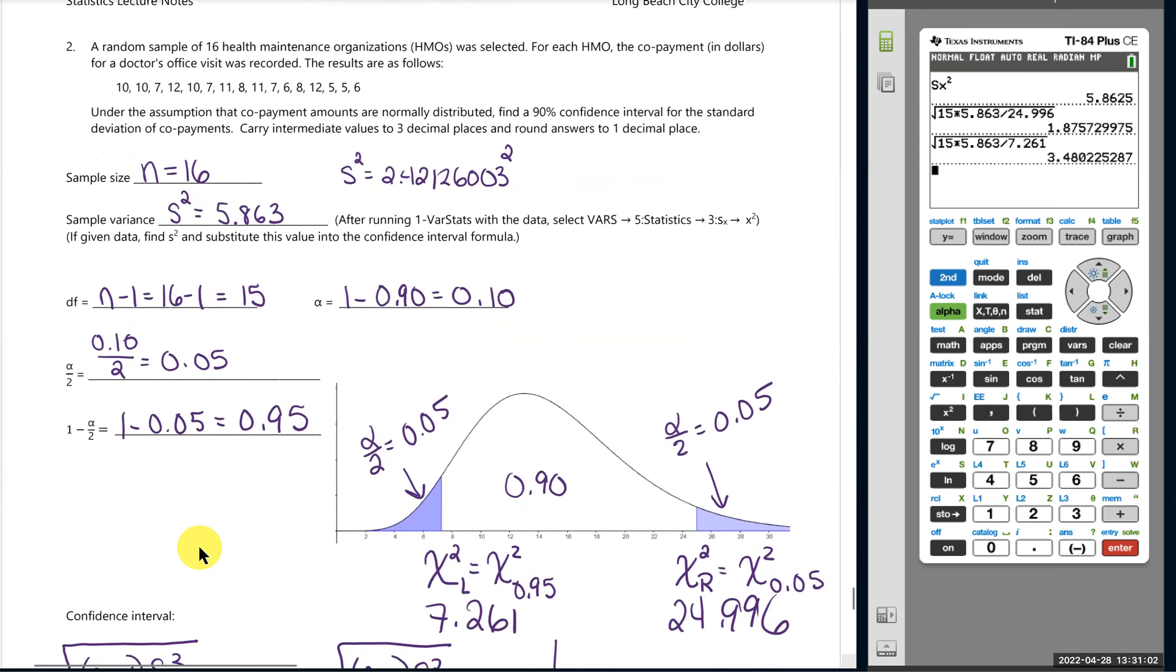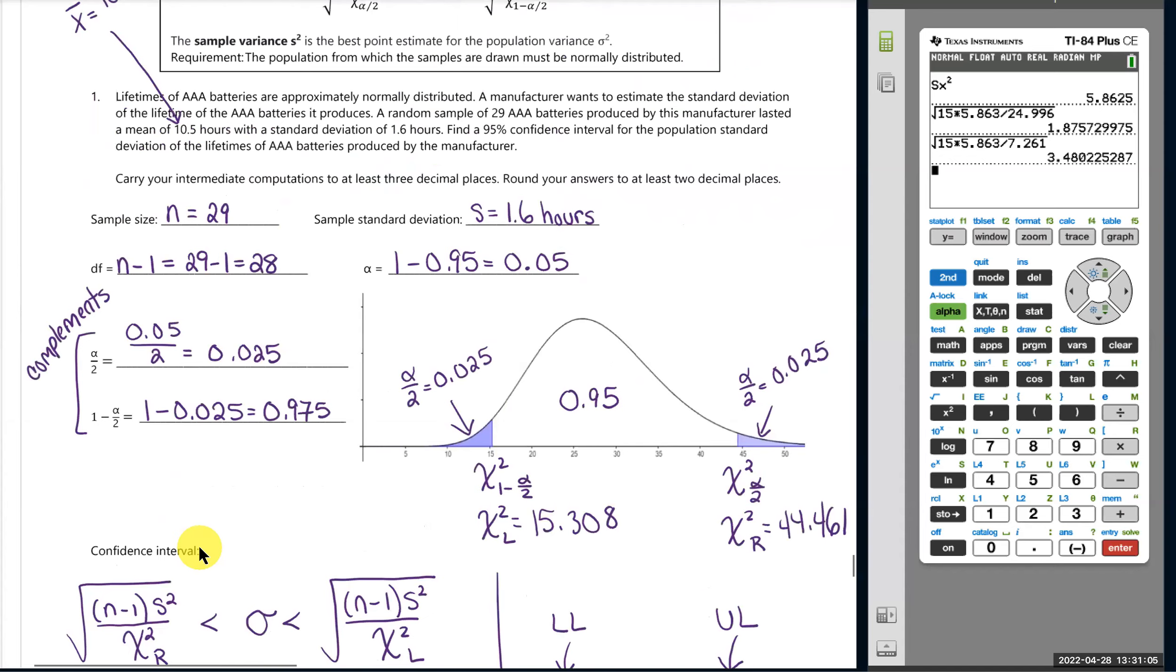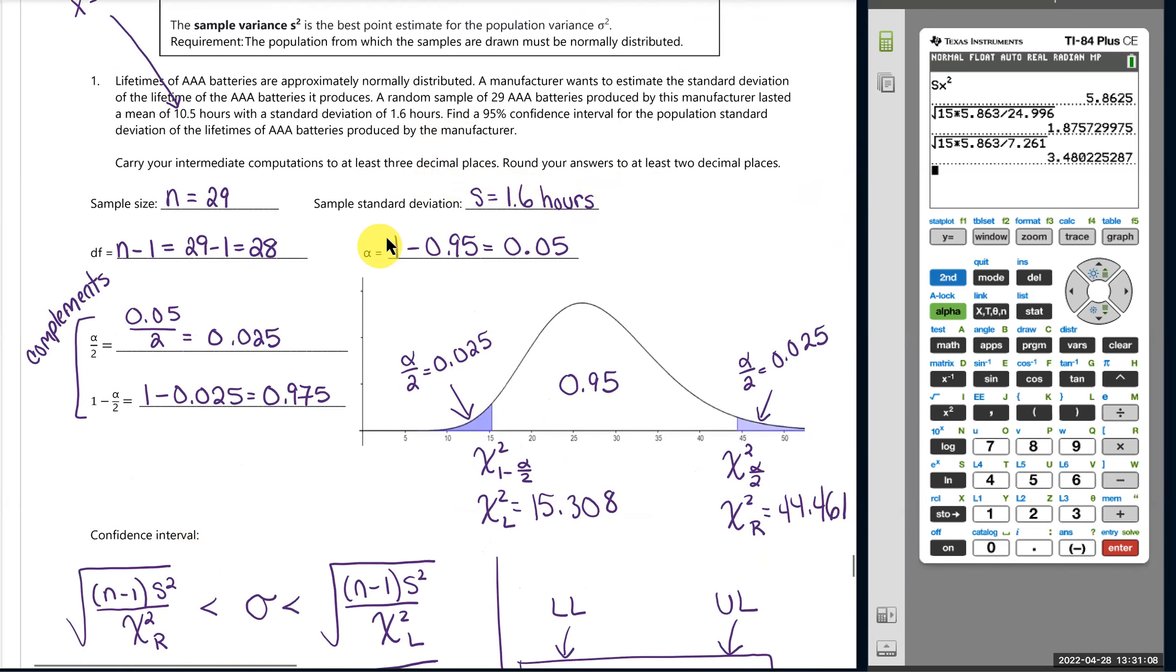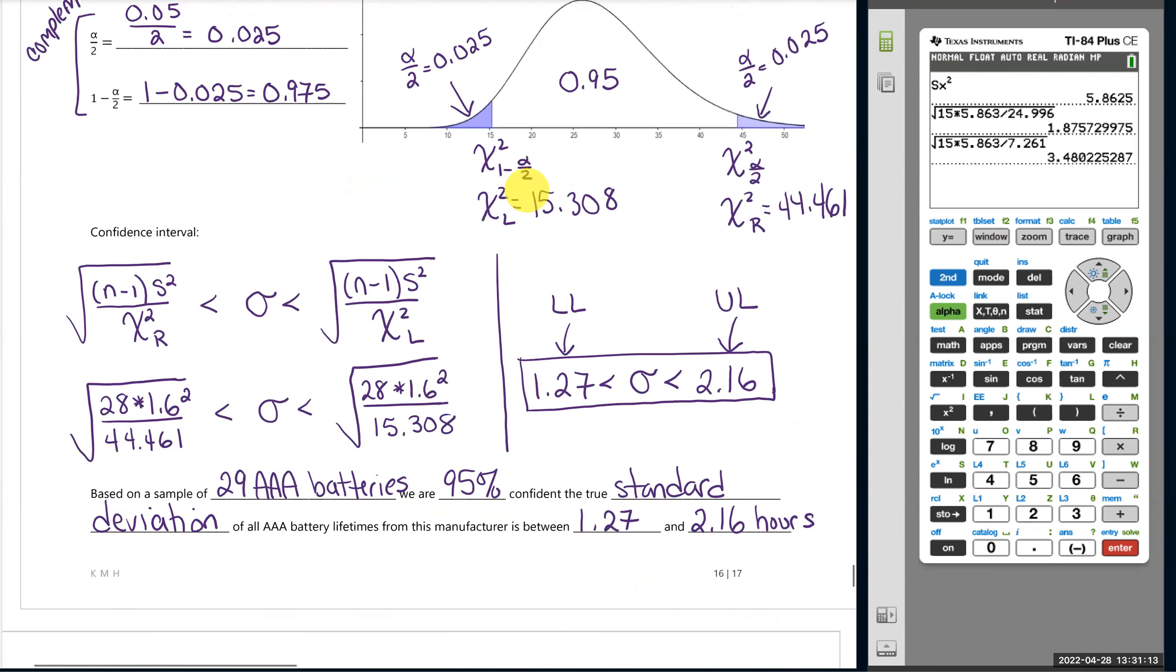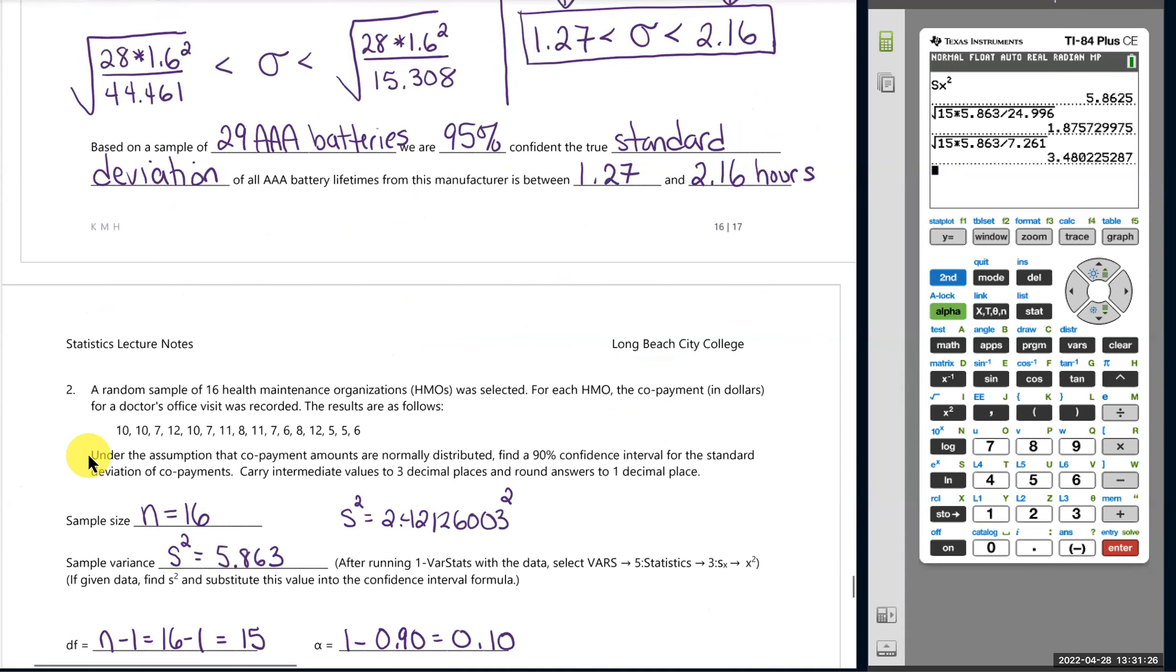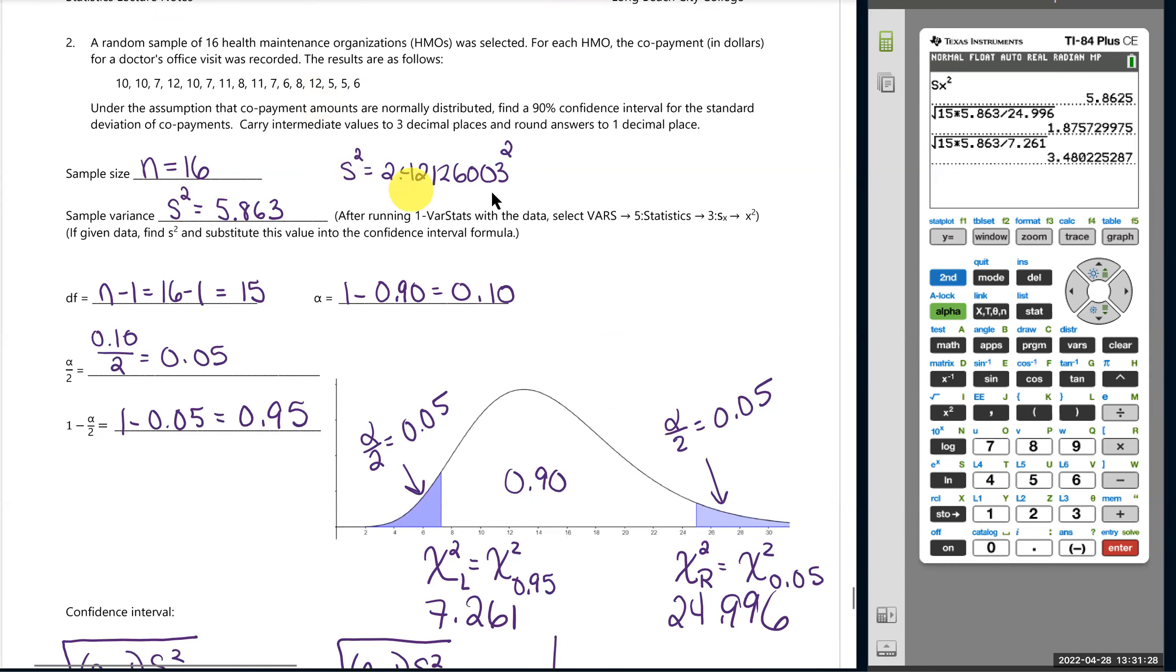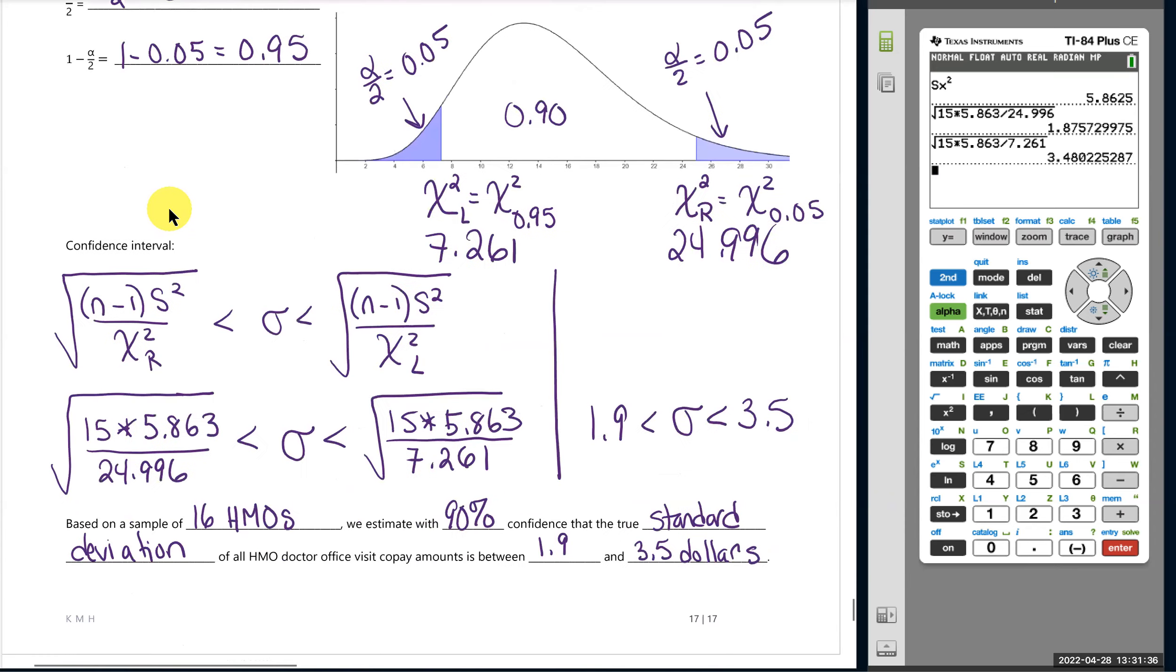It's worth mentioning that the last problem we did, rather than giving us data, they just gave us S. So in this case, when they gave us sample standard deviation, I waited till later to square. I just put in the S and then squared it. So this method is, I would prefer doing it this way if they give you S. And to maintain accuracy, if they give you data, go ahead and find the S squared and then use that value in the formula. That ends our process for finding a confidence interval of a population standard deviation.